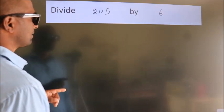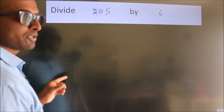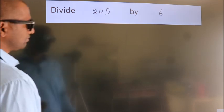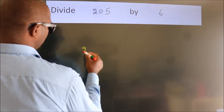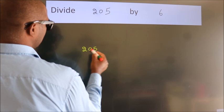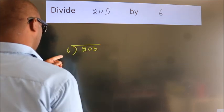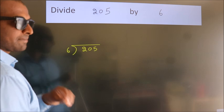Divide 205 by 6. To do this division, we should frame it in this way: 205 here, 6 here. This is your step 1.